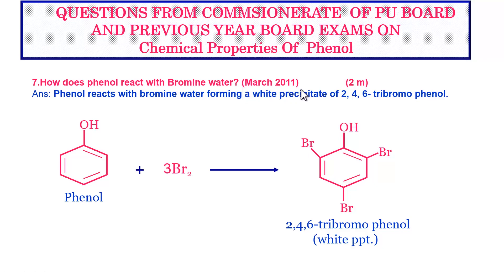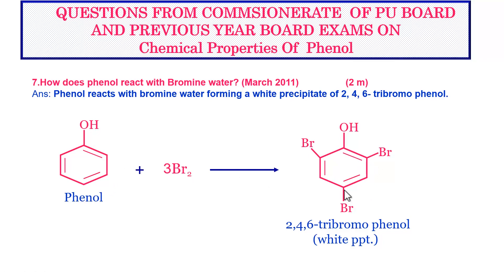Next question: how does phenol react with bromine water? This question was asked in the March 2011 board examination for two marks. Phenol reacts with bromine water forming a white precipitate of 2,4,6-tribromophenol. The reaction: C6H5OH + 3Br2 gives tribromophenol — with Br attached at the 2nd, 4th, and 6th carbon atoms of the phenol ring — along with 3HBr.